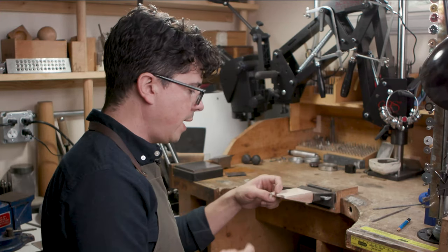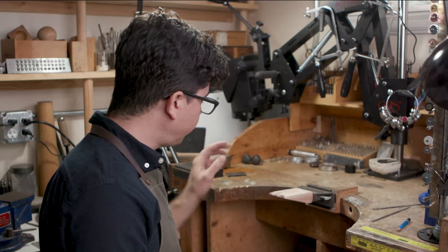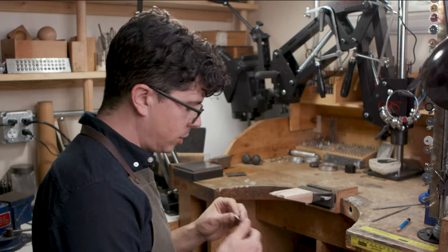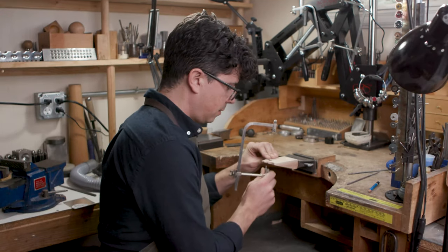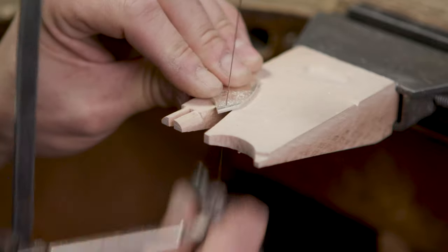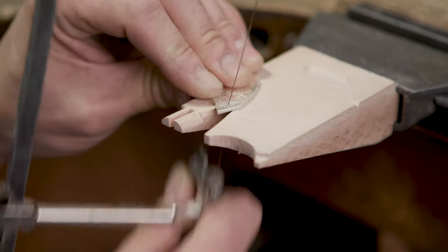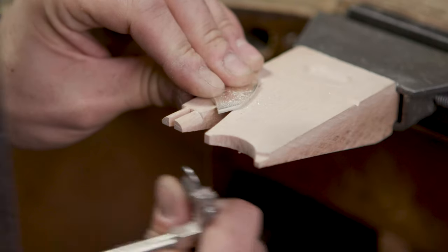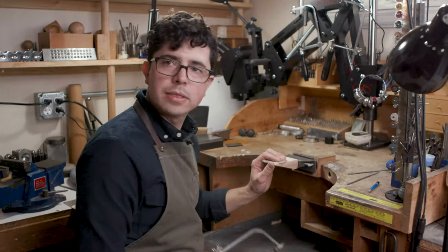Then we have this wedge shape here, which is perfect for piercing out sheet. It allows you to have the metal supported on both sides rather than just on one side when you are sawing out sheet.